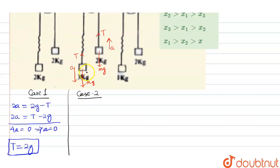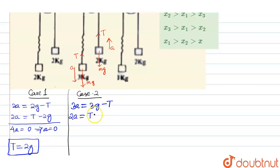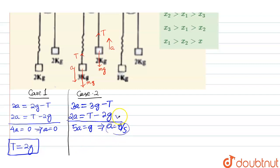In Case 2, let's consider the left side mass is moving downward with acceleration a, and the right side block moves upward with the same acceleration a. From the free body diagram of the left side mass: 3a = 3g - T. For the right side mass: 2a = T - 2g. Adding both equations: 5a = g, which implies a = g/5. Putting this value of a back in, we get T = 12g/5.